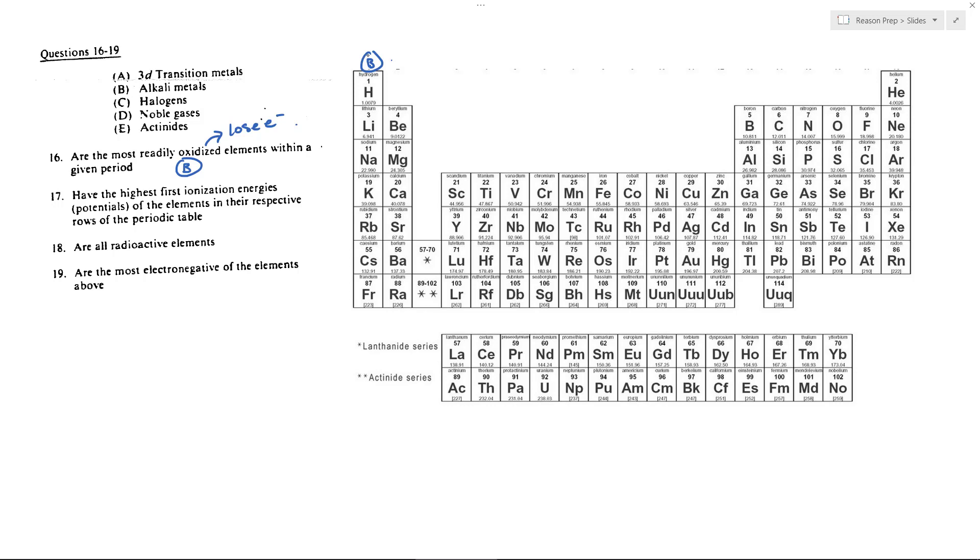Which one have the highest first ionization energies of the elements in the respective rows? Now we're going to the opposite end. Which elements is it the hardest to remove their electrons? Which has the highest ionization energy, the most energy required to remove that electron?